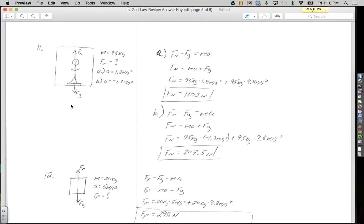Number 11. In this problem, a 95 kilogram person is standing on a scale that just happens to be in an elevator. We want to know what the apparent weight of this person is when the elevator is accelerating up and down, upward at 1.8 meters per second squared, and also down, negative 1.3 meters per second squared.